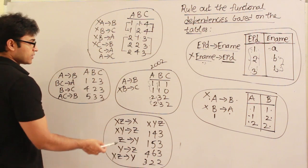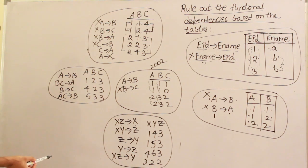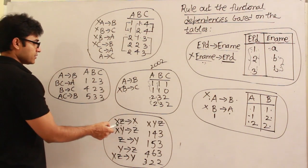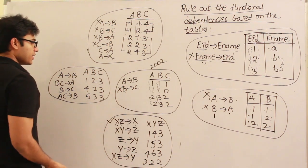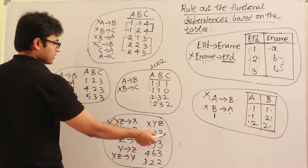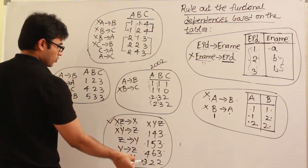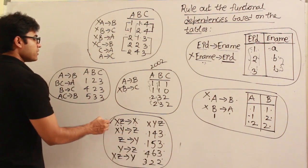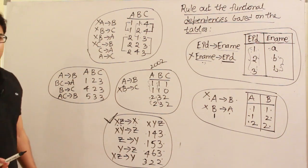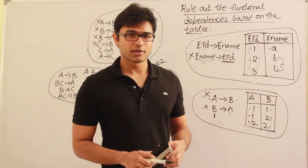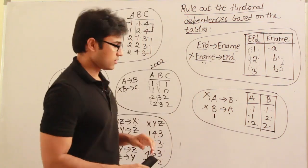What about XZ→X? This is a trivial dependency. A trivial dependency is one where the left-hand side is a superset of the right-hand side. Trivial dependencies always hold — if you give X and Z as 1,3, the value of X is 1; if X and Z are 4,3, value of X is 4. Trivial dependencies always hold regardless of the table or the requirement analysis, so you need not worry about them.